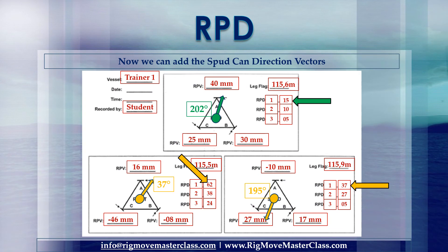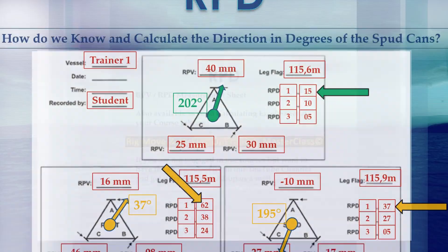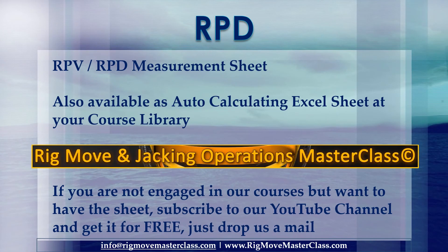Now we can add the spud can direction vectors. How do we know and calculate the direction in degrees of the spud cans? The RPV/RPD measurement sheet is also available as an automatically calculating Excel sheet in your course library. If you are not engaged in our courses but want the sheet, kindly subscribe to our YouTube channel and get it for free — just drop us an email.